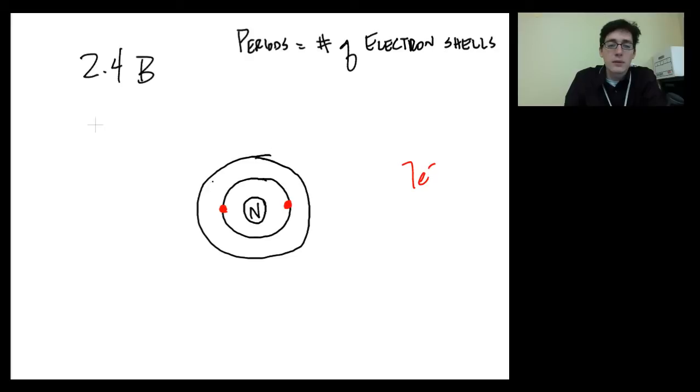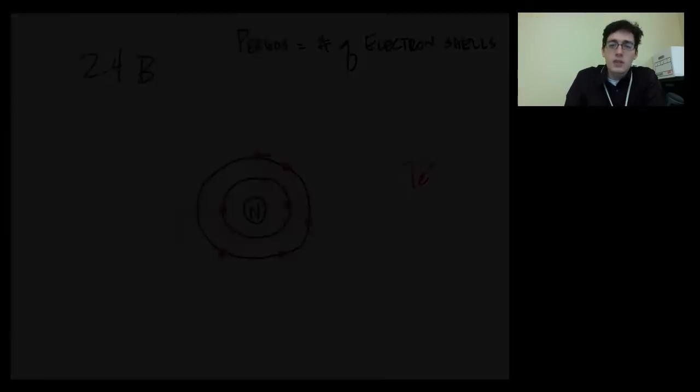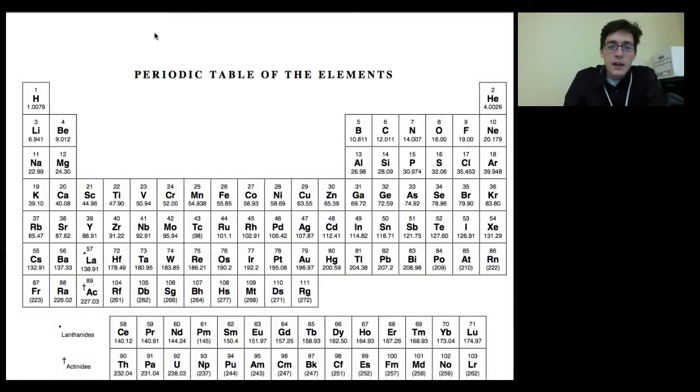Now if nitrogen has seven electrons total, seven E minus, that means I need five more in this outside ring. So we'll go one, two, three, four, five electrons. Now check this out. On your periodic table, nitrogen is one, two, three, four, five columns over. Hmm. That's also very interesting.